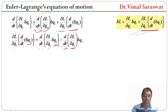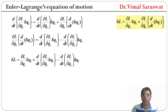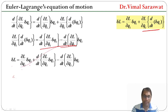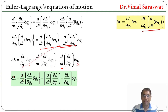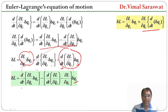Substituting this back, δL equals (∂L/∂qi)·δqi plus d/dt[(∂L/∂q̇i)·δqi] minus [d/dt(∂L/∂q̇i)]·δqi. Grouping the first and third terms together with δqi common, δL equals d/dt[(∂L/∂q̇i)·δqi] minus [d/dt(∂L/∂q̇i) − ∂L/∂qi]·δqi.